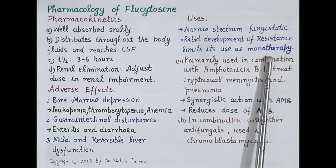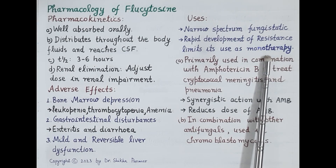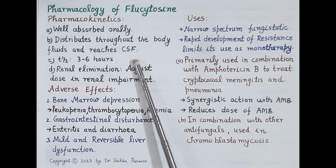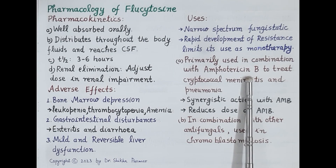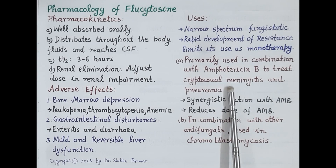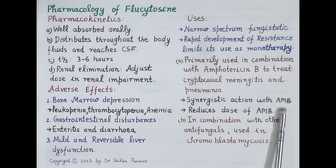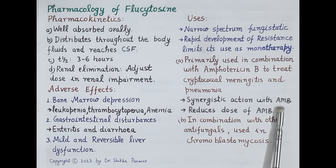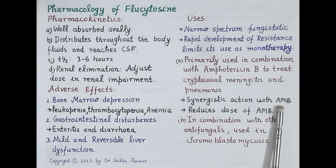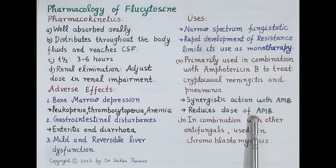As already discussed, flucytosine reaches the cerebrospinal fluid, and therefore in combination with amphotericin B, flucytosine is used in the treatment of cryptococcal meningitis and also cryptococcal pneumonia. Flucytosine shows synergistic action with amphotericin B. Amphotericin B is a polyene that binds to ergosterol in the fungal cell membrane and forms pores, through which flucytosine easily passes to reach inside the fungal cell. This synergistic effect also helps reduce the dose of amphotericin B, which is highly toxic.